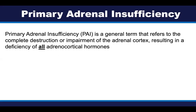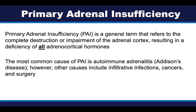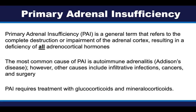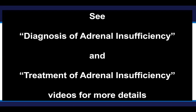To review: primary adrenal insufficiency refers to the complete destruction or impairment of the adrenal cortex, causing a deficiency in all adrenocortical hormones. The most common cause is autoimmune — often called Addison's disease — but there are many other causes including infiltrative and surgical causes. All patients require treatment with glucocorticoids and mineralocorticoids. Subsequent videos will cover the details of diagnosis and treatment. This ends part two; you can now move on to part three of this video series.